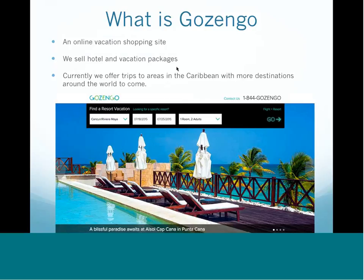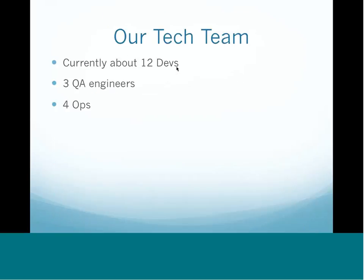So what is Gozengo? We are a B2C online vacation shopping site — you come to our site and we sell both hotel and vacation packages to you. Currently we offer trips to the Caribbean and are hoping to do more destinations in the future. You can see our front page below, where users do searches and so on. Our tech team is about 12 devs, three QA engineers with me as director of QA, and four ops people. The team is small, and I've been here basically since the company started when we were only about seven or eight people.